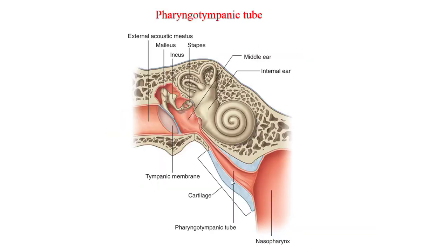The auditory tube, also known as the eustachian tube or the pharyngo-tympanic tube, is a narrow canal located within the anterior wall of the middle ear and the lateral wall of the nasopharynx. It is comprised of both bone and cartilage and is about 4 cm in length. The eustachian tube is closed under normal circumstances; however, when pressure needs to be equalized — for example, during takeoff in a plane or when scuba diving — the eustachian tube can open to allow a small amount of air through, equalizing the pressure and preventing damage to the middle ear. The eustachian tube also functions to drain mucus from the middle ear.